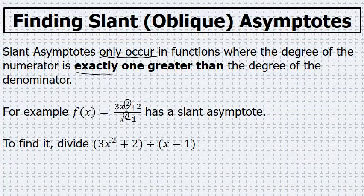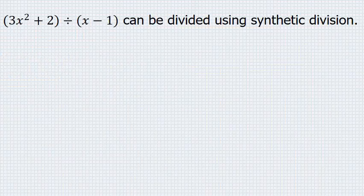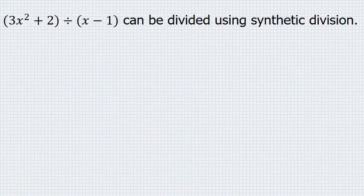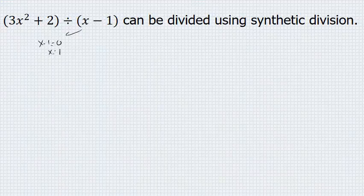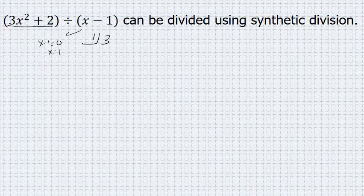To find the slant asymptote, we have to do a division. We're going to divide the numerator, 3x squared plus 2, by the denominator, x minus 1. In this situation, we can divide using synthetic division. Synthetic division is a process where you take what you are dividing by, in this case x minus 1, set it equal to 0, and find that x equals 1, and put that in a box, and then across the top row write the coefficients of what you're dividing.